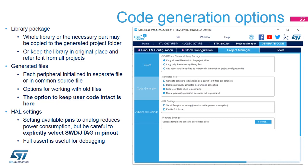Full assert enables checking the parameters passed to the HAL functions, and may help reveal some bugs in the user code without an excessive debugging effort.